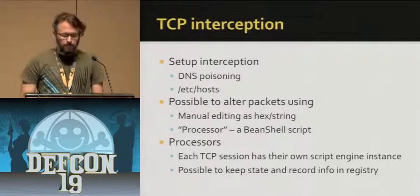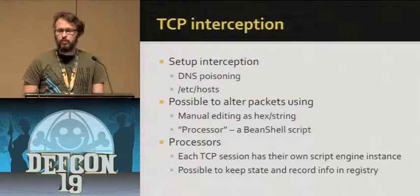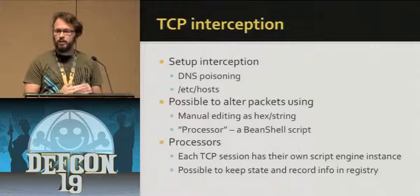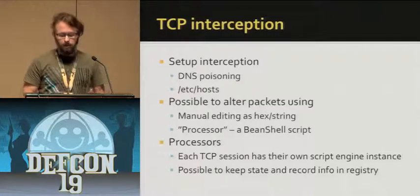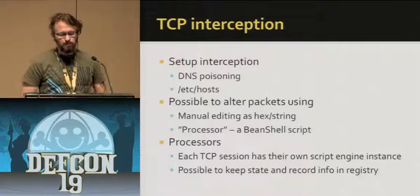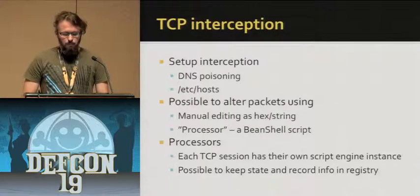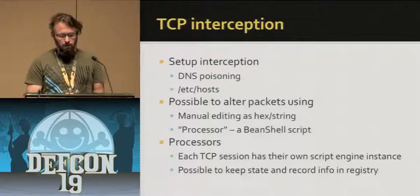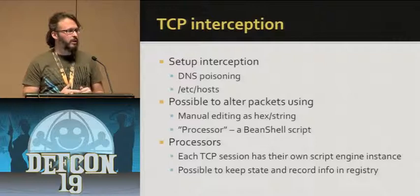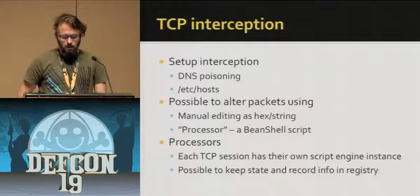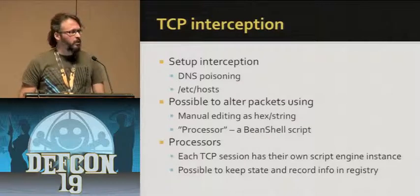We provide two ways of doing TCP interception: either through manual interception where you intercept the packets and get an editor to edit the packet, or a scripted possibility where you have different processors. You can write your own code in Java through the BeanShell integration. Basically each TCP session gets its own BeanShell interpreter, so you have the possibility to keep state within a TCP session. If you collect some interesting data in the first two packets, you can keep them in a registry — basically just a hash map — and then pull them up in the sixth or seventh packet where you actually need them.